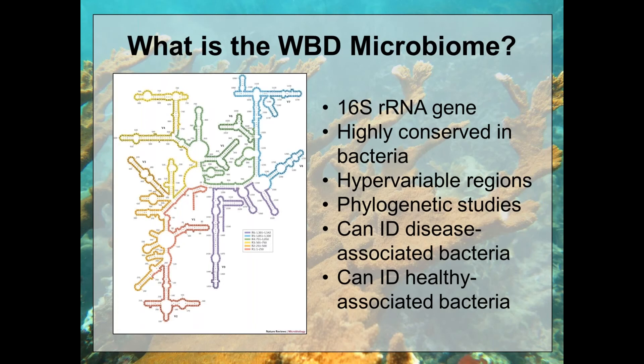All bacteria have a 16S rRNA gene — it's highly conserved throughout bacteria, but within that conserved gene there's a hypervariable region that varies widely between bacterial species. You can tell what bacteria are present by sequencing part of this gene and doing phylogenetic studies. I extracted all DNA, did a multiplex 16S library prep, and sequenced the V4 region. I used the Illumina HiSeq platform, used CHIMERA to remove low quality reads and cluster at 97%, ending up with about 4,200 OTUs — essentially bacterial species. I then did differential abundance analysis with the R package MetagenomeSeq.